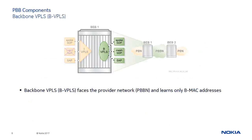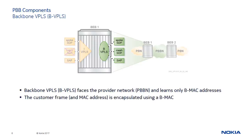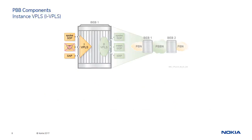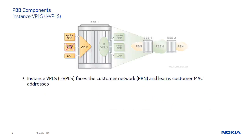A BVPLS faces a provider network and learns only the backbone MAC addresses. When a customer frame arrives at the backbone VPLS, the provider BMAC source and destination addresses are added, effectively hiding the customer MAC addresses. The frames are then transported across the provider network based on the BMAC addresses. Note that a BVPLS can use spoke or mesh SDPs. An instance VPLS or IVPLS faces the customer network and learns customer MAC addresses. There is an end-to-one mapping between IVPLSs and BVPLS, so each IVPLS is associated with only one BVPLS. However, multiple IVPLSs can be associated with the same BVPLS.